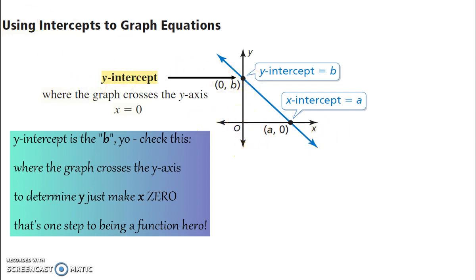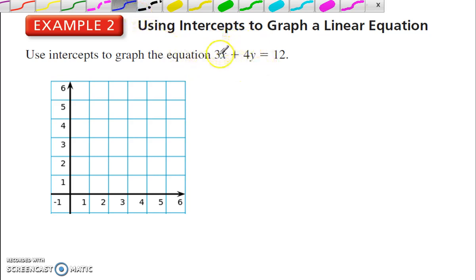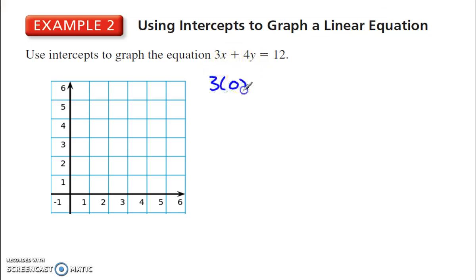That's where it crosses the y-axis. On the flip side, the x-intercept is where it crosses the x-axis. So, we make y 0 to get the x-intercept. All right, so we want to use those intercepts to graph a linear equation. So, to find the y-intercept, to determine y, just make x 0. That's one step to be in a function here. So, we'll make x 0.